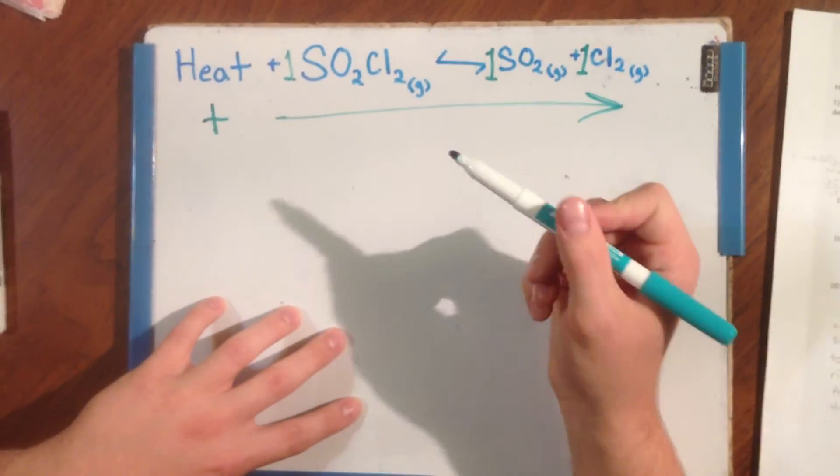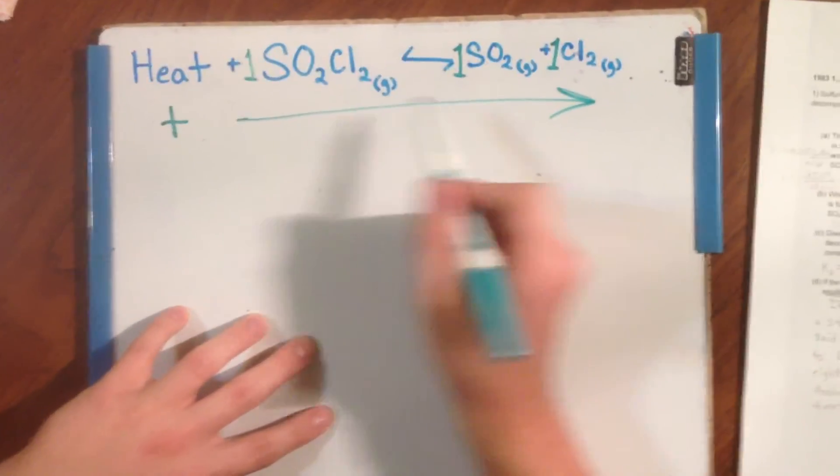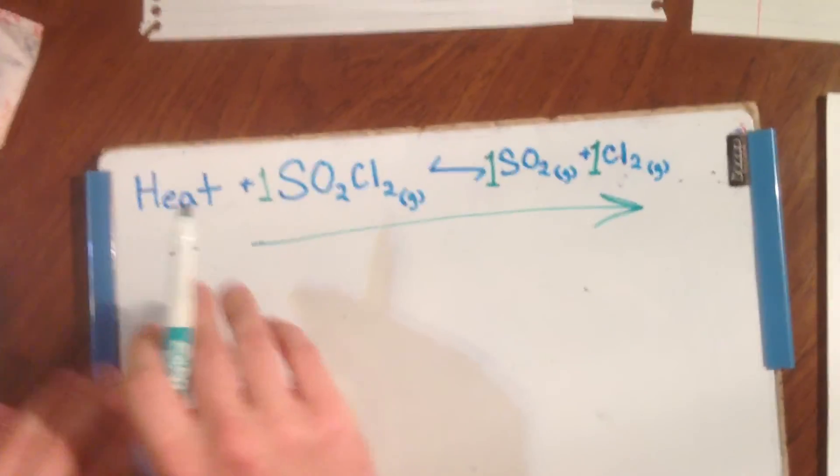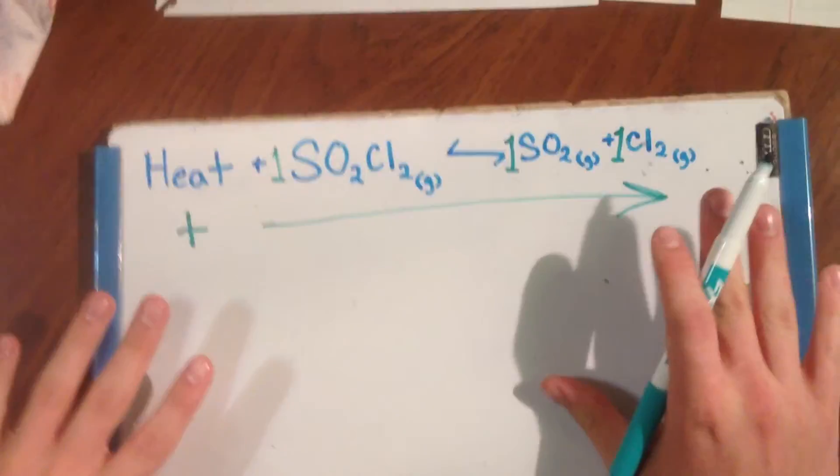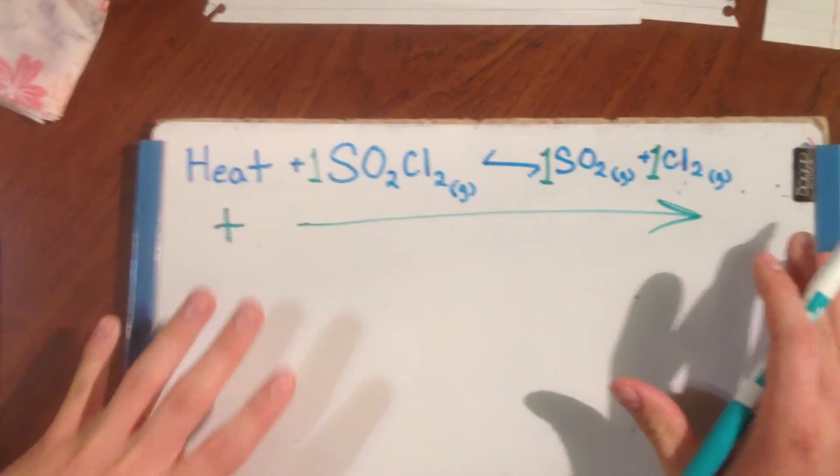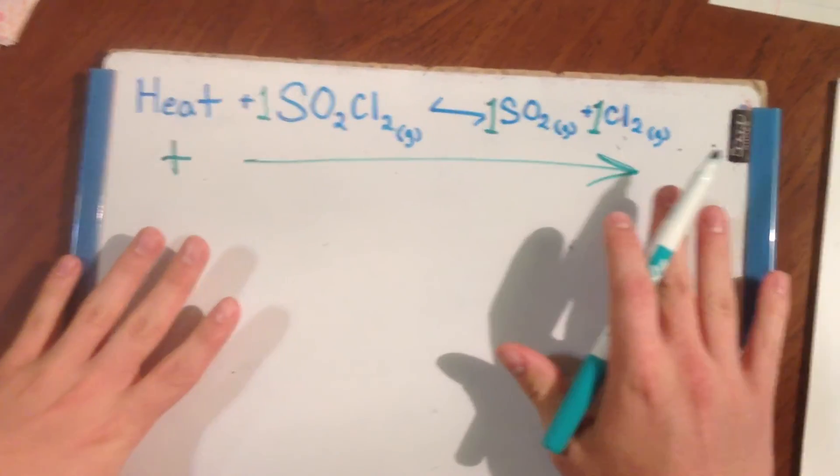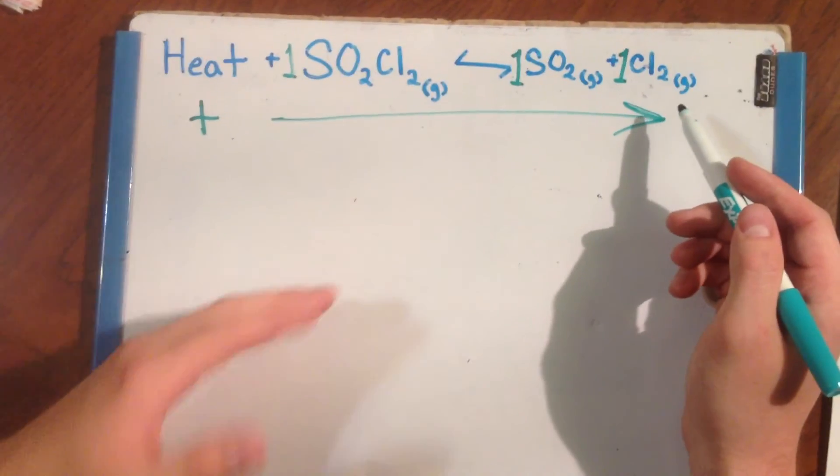a right-hand shift will occur to relieve the stress on the left side. Because, remember, endothermic means heat is on the left side of the reaction. So, increasing heat means to balance the equation, once again, restore its equilibrium, a right-hand shift will occur, producing more products.